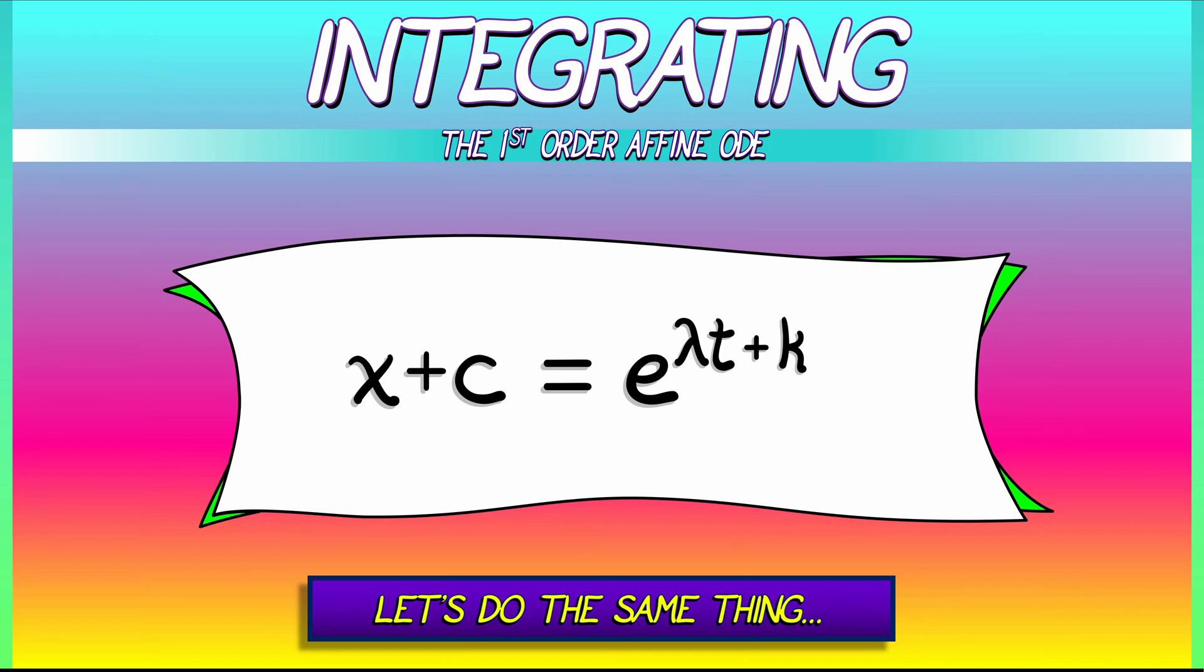We can, just like last time, use exponent laws to say that that's e to the lambda t times e to the k. That e to the k, e to the whatever constant that is, we're just going to replace that by another constant. Let us call that capital K and put that out in front so that we have x plus little c equals capital K e to the lambda t.